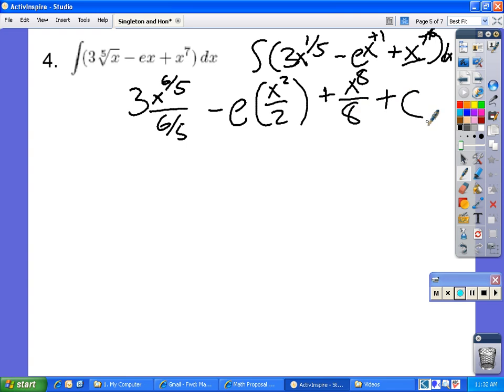Then we simplify this. 3 times fifth sixth equals 15x sixth fifth minus e over 2 x to the power of 2 plus x to the 8 over 8 plus c. And this is our answer.